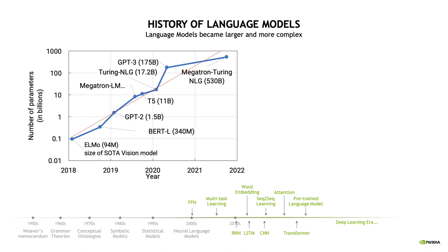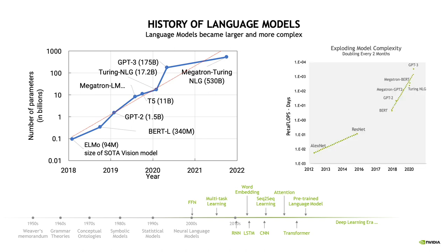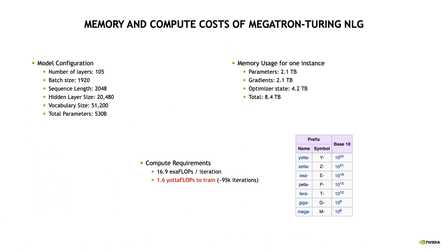Way back in 2018, we started at about the same size as state-of-the-art vision models, but we've grown exponentially since then. Most recently, NVIDIA and Microsoft combined to train 530 billion parameter models. Both the number of parameters and the complexity — the number of operations needed to train the model — are exponentially growing. So we have these language models that are getting very, very large.